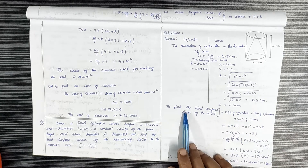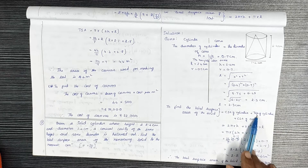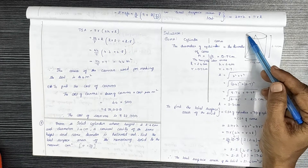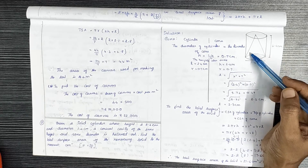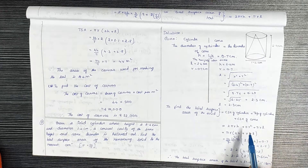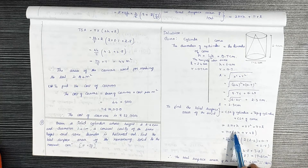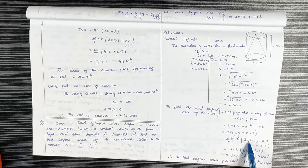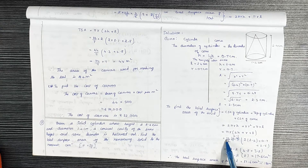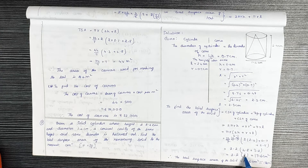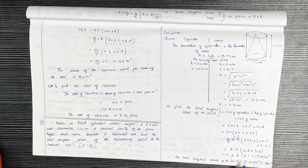Total surface area of the remaining solid equals curved surface area of cylinder plus area of top of cylinder plus curved surface area of cone, giving 2πRH + πR² + πRL = πR(2H + R + L). Substituting: π = 22/7, R = 0.7, which gives 0.1 × 22 × (4.8 + 0.7 + 2.5) = 2.2 × 8 = 17.6cm², approximately 18cm².